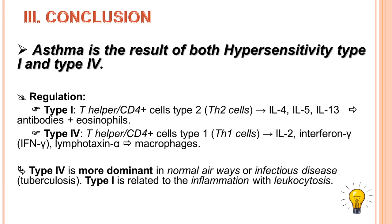In conclusion, based on the information presented, asthma is the result of both hypersensitivity type 1 and type 4. Because in the classification of asthma, atopic asthma refers to type 1 IgE-mediated hypersensitivity. Additionally, asthma is defined as a chronic inflammatory condition characterized by infiltration of the airway lumen and mucosa by activated eosinophils, mast cells, macrophages and lymphocytes — and macrophages and lymphocytes are closely related to hypersensitivity type 4. Kết luận: asthma là kết quả của cả 2 loại quá mẫn loại 1 và loại 4. Atopic asthma liên quan loại 1, còn macrophage và lymphocyte liên quan chặt chẽ đến loại 4.